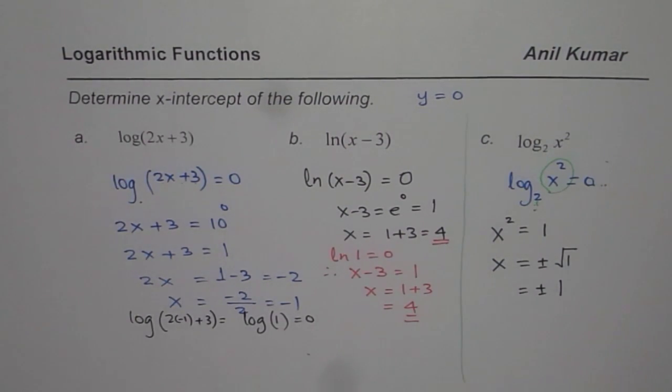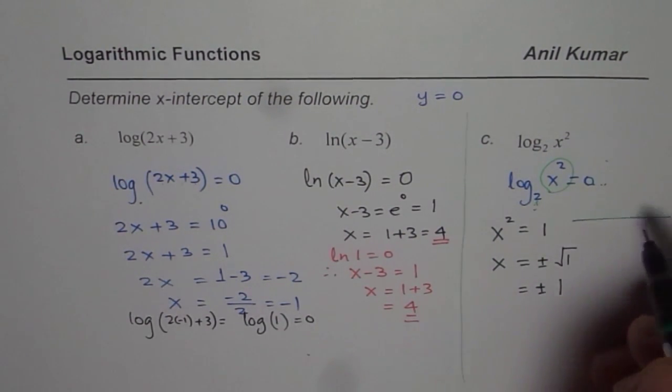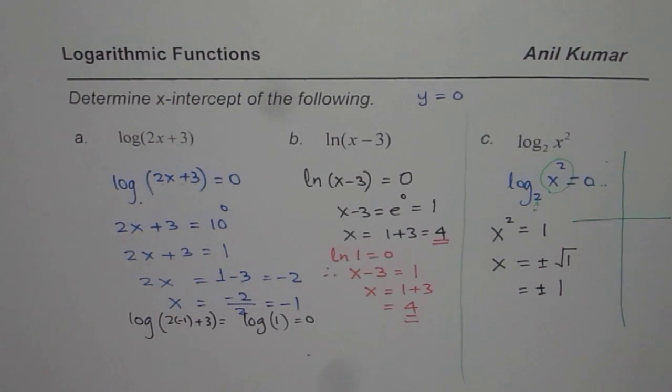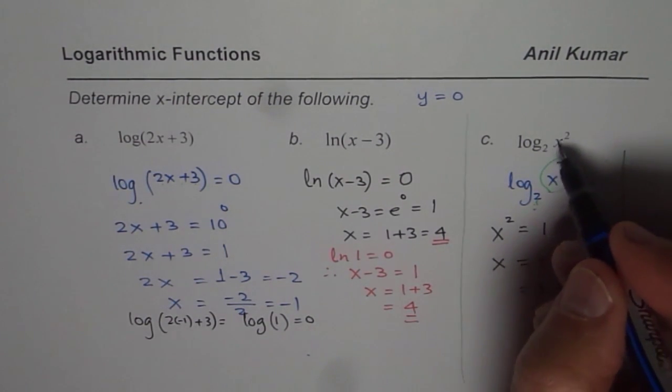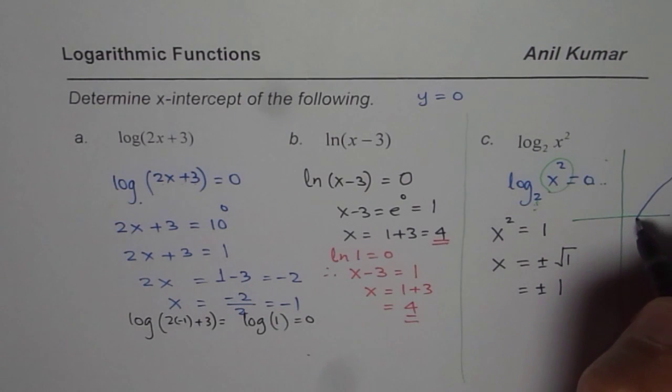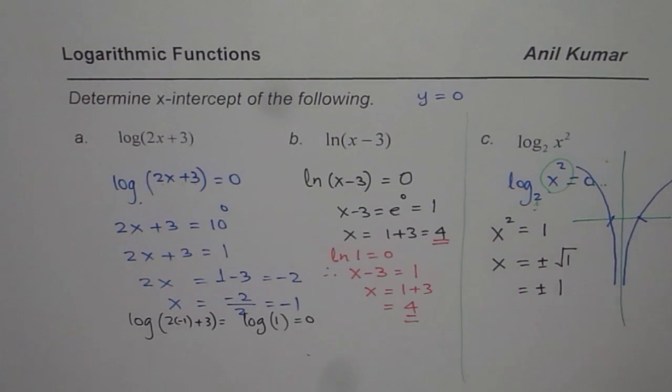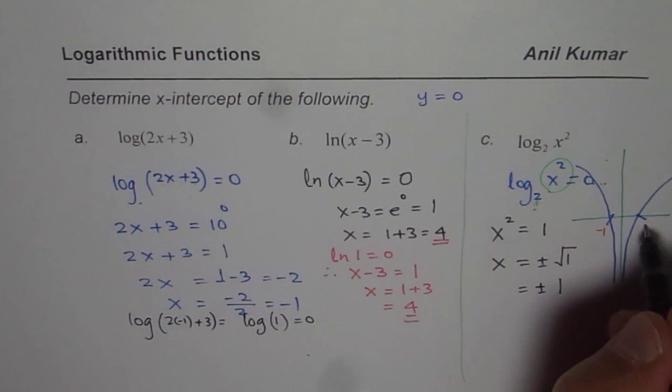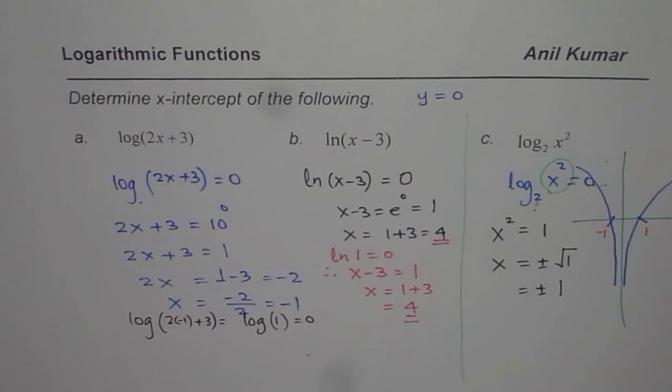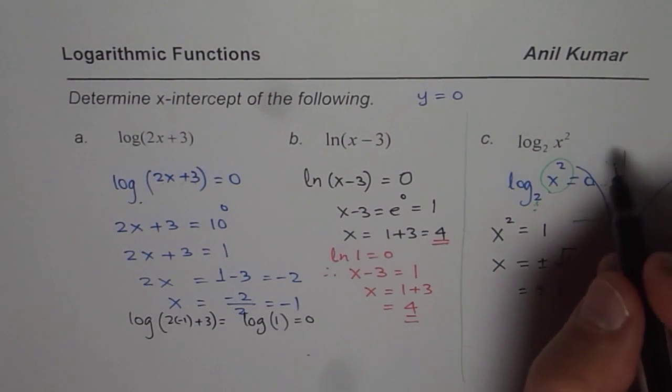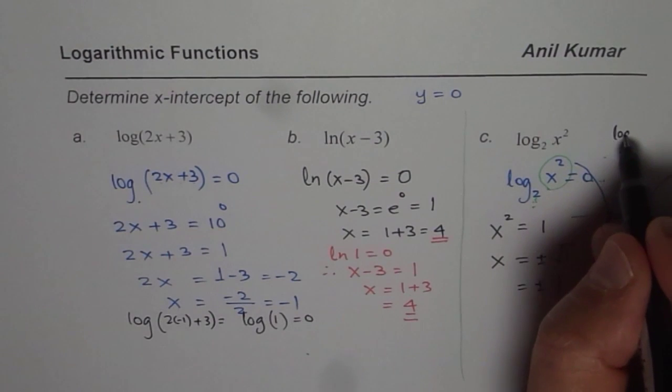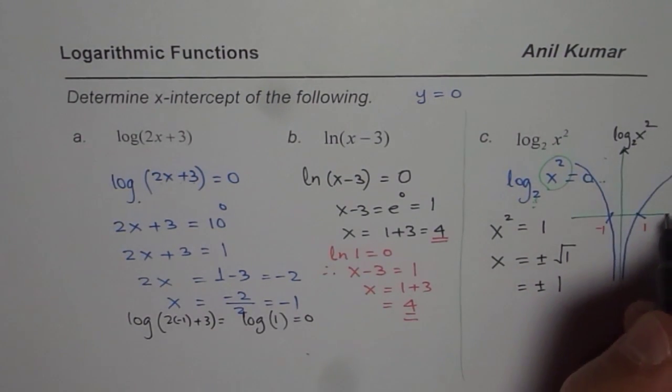If you really sketch this function, it is a very interesting function. You should sketch and figure it out. This is even, so you get symmetric like this. These are the 2 intercepts we are talking about and these are going to be at plus 1 and minus 1. So that is how it is going to be. This is log 2 of x squared. Perfect. Approximate drawing.